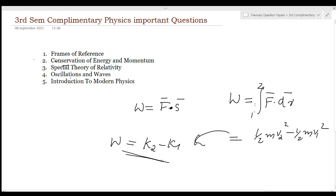Next: what is conservative force and non-conservative force? A force is said to be conservative if the work done by it on a body moving between two points depends only on those points and not on the path taken. Also, a force is conservative if the work done by it on a body moving through any round trip is zero.